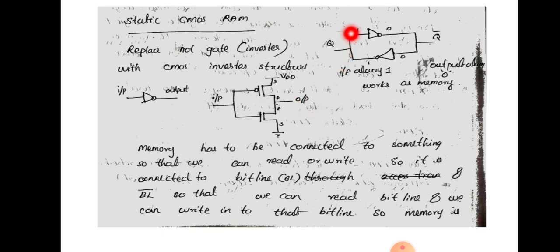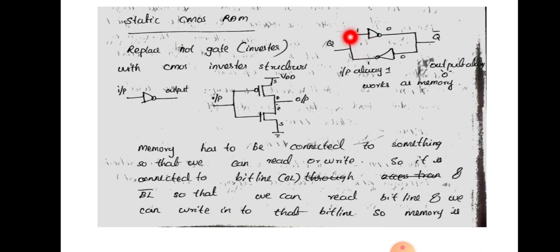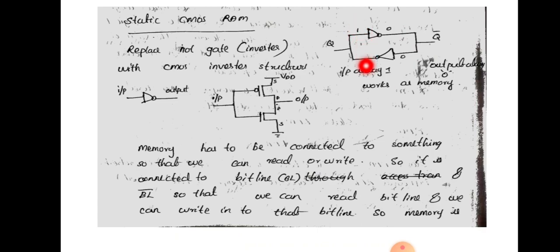Consider the inverter structure where Q is the input and Q-bar is the output. If the input is 1, the output Q-bar is 0, because the inverter converts 1 to 0. Similarly, when the input is 0, the output will be 1. When 1 is applied, it is maintained through feedback: the output of 0 is fed back to the second inverter, producing output 1. This means the input value is stored across two inverter cycles, so this cross-coupled structure acts as a memory element.